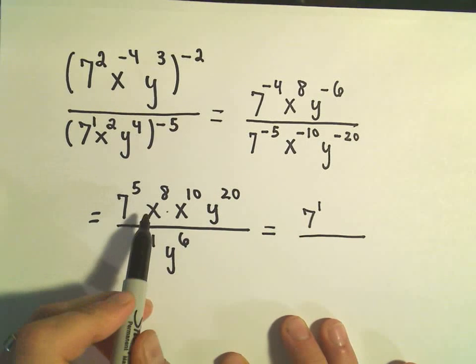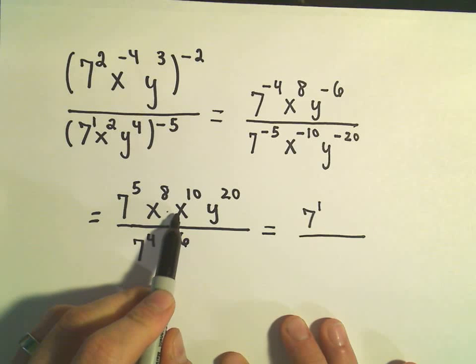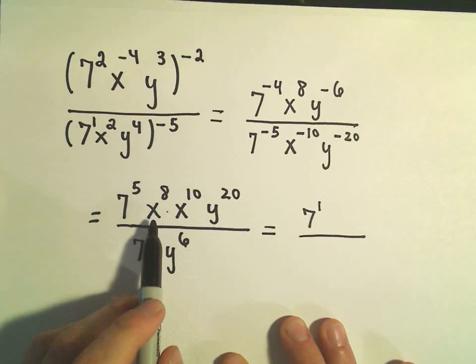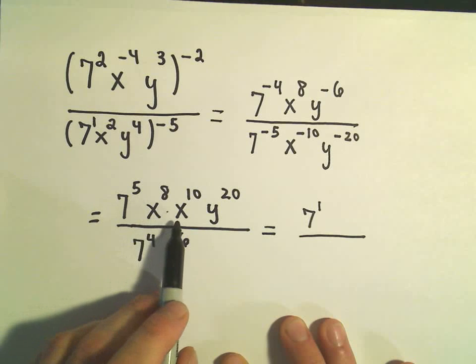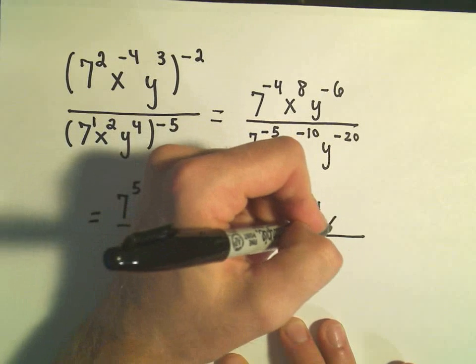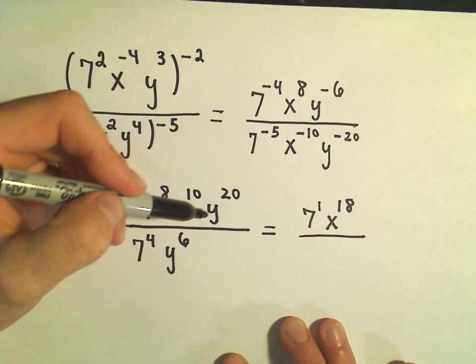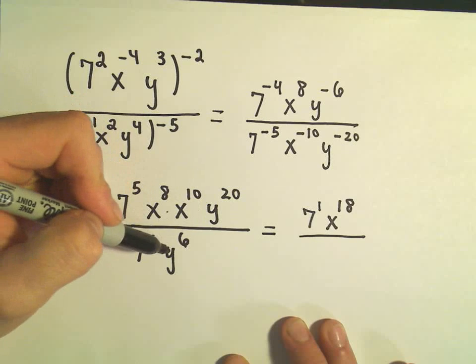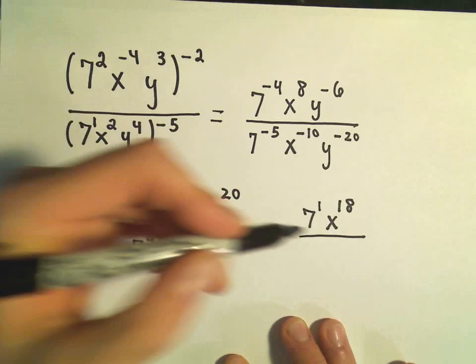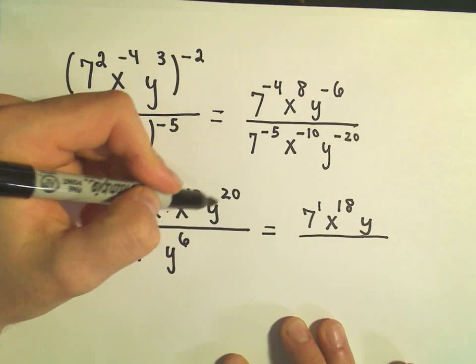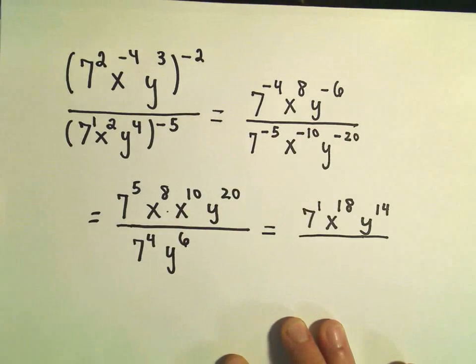Notice I have x to the 8th times x to the 10th in the numerator. There's no x's in the denominator now. So if I multiply x to the 8th times x to the 10th, we add the exponents. That'll give us x to the 18th power. And we have y to the 20 over y to the 6th. Again, if we subtract the bigger y's on top, if we take 20 minus 6, we'll get to the 14th power.